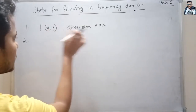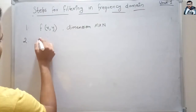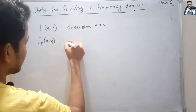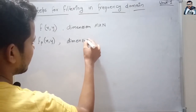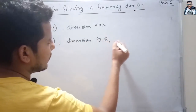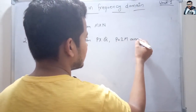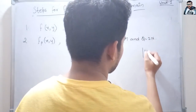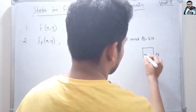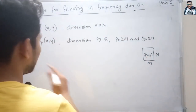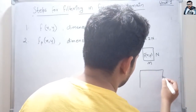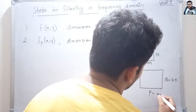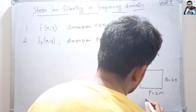We pad the image to form an image of dimension P×Q. Here is the padded image f_p(x, y), where P equals 2M and Q equals 2N. So if the original image f(x, y) is M×N, the padded image f_p(x, y) is 2M×2N.